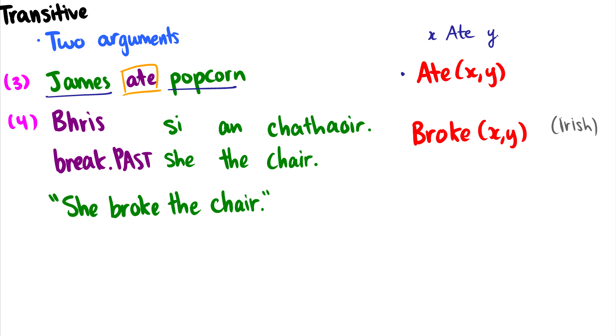Let's take another look at another Irish example. So 'break past' - this is the past tense of break - and then we also have another two noun phrases as arguments. The first one is 'she' and the second one is 'the chair.' So note again that in Irish we have the verb coming first, and then we have the subject, and then we have the object. So this is a VSO language. So 'she broke the chair.' Again, just like the English example, 'broke' would be a transitive verb that takes two arguments.